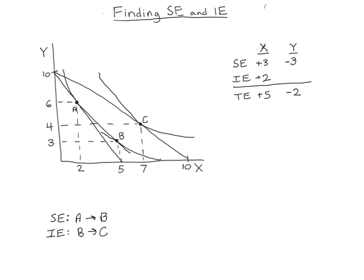And then we can look on the graph, the movement from b to c for y is a plus one. So the income effects for both were positive, whereas the substitution effect was positive for x and negative for y. And we can see all of our numbers add up in the table. Three plus two is five, negative three plus one is negative two. So we're done.